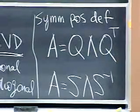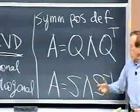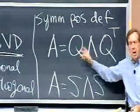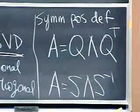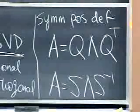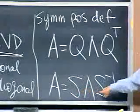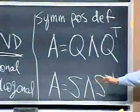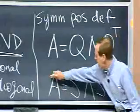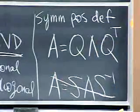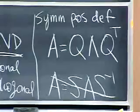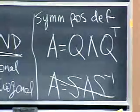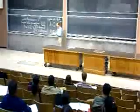That's the singular value decomposition in the case where our matrix is symmetric positive definite. In that case, I don't need two matrices U and V — one orthogonal matrix will do for both sides. But this would be no good in general, because usually the eigenvector matrix isn't orthogonal. I'm looking for orthogonal times diagonal times orthogonal.